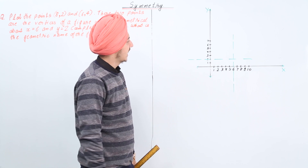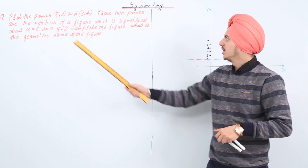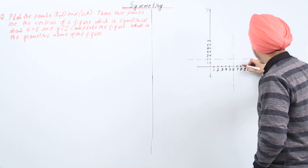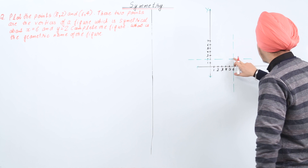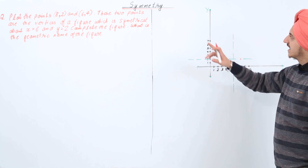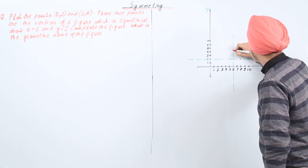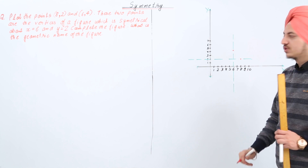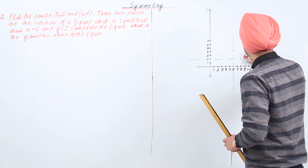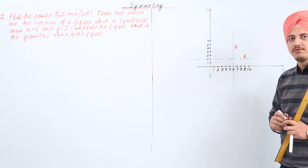Now I am going to plot (8, 2) and (6, 4). Where is (8, 2)? This is 8 on the x-axis and 2 on the y-axis, so (8, 2) is somewhere over here. And where is (6, 4)? This is 6, and (6, 4) is over here. So we have these two points — let's name them A and B. We have (8, 2) as A and (6, 4) as B.